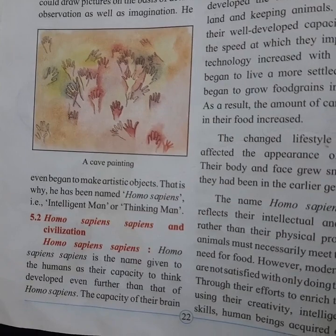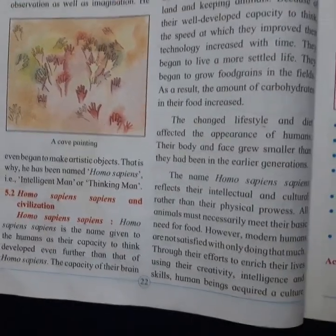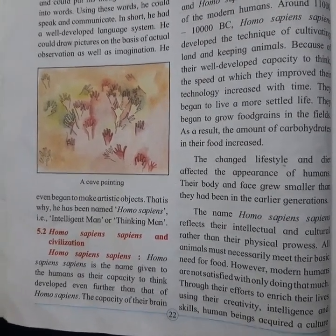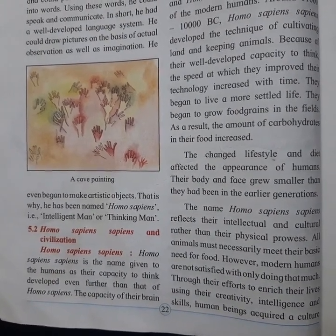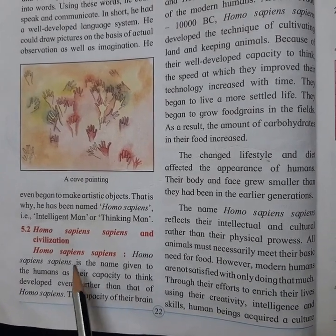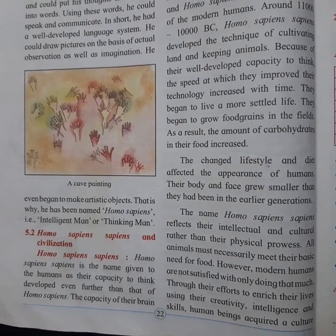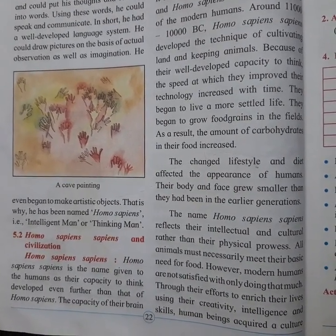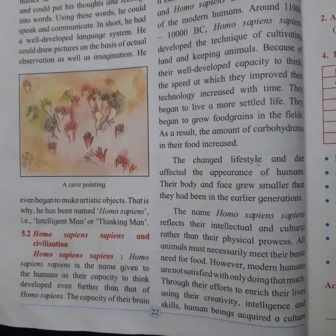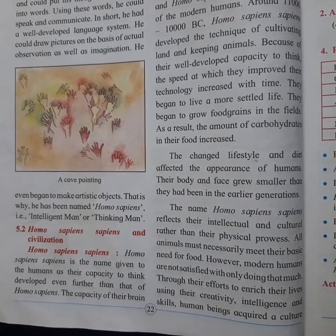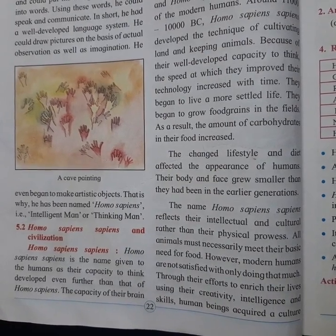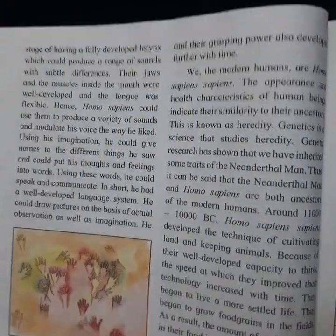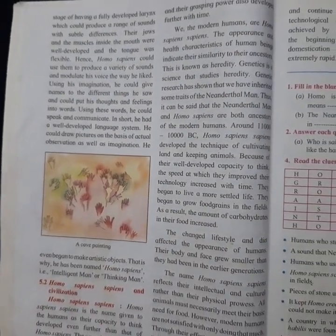Now we have finished with Homo sapiens. Our last part of this chapter is Homo sapiens sapiens and civilization. Homo means man, sapiens means intellectual — and here sapiens appears twice. Homo sapiens sapiens is the name given to humans according to the capacity of their thinking, because they developed their thinking capacity greatly. Double sapiens means doubly intellectual man, because their brain capacity, grasping power, and understanding power got developed. They started understanding things very properly, and even we modern humans come in the Homo sapiens sapiens category — the last generation of human species development.